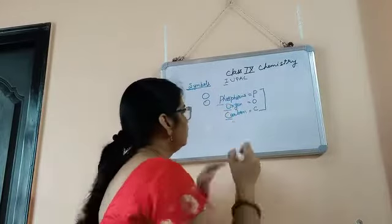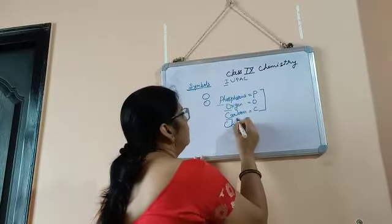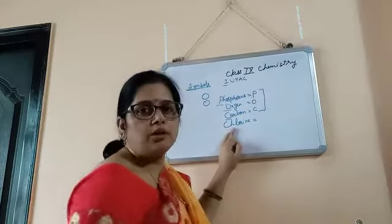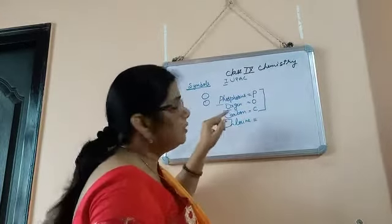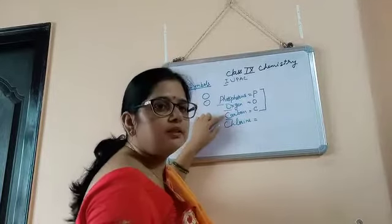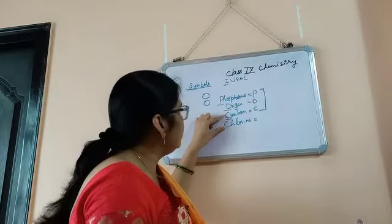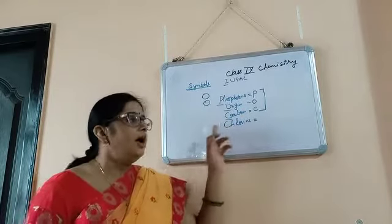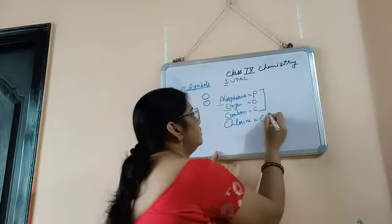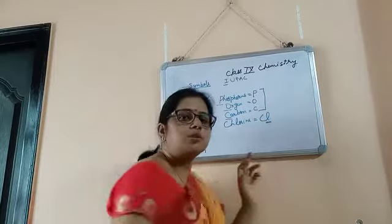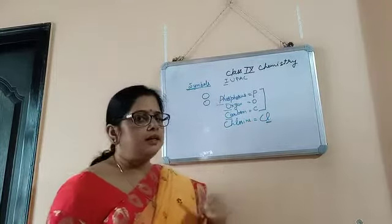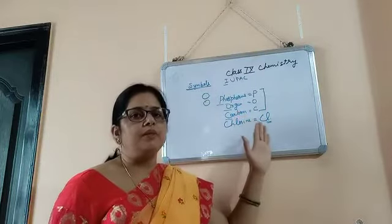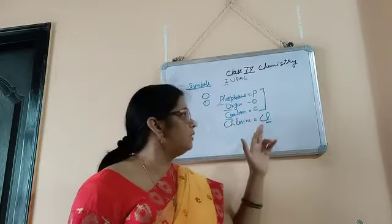But if we take chlorine, the first letter is C — which is already used. Then we have to take another letter, that is 'l'. The second letter should be a small letter. In writing symbols, the first letter should be capital and the second letter should be small — so chlorine becomes Cl.